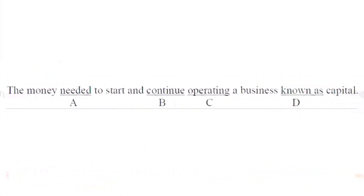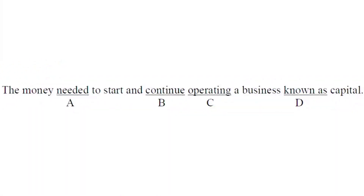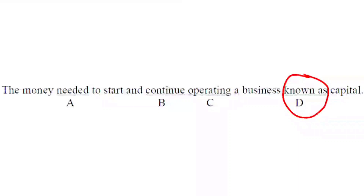Next sentence: 'The money needed to start and continue operating a business non-age capital.' The error comes in option D — 'non-age' is incorrect. The correct term is simply that money needed to start and continue operating a business is called capital. The word used should reflect the proper financial vocabulary.